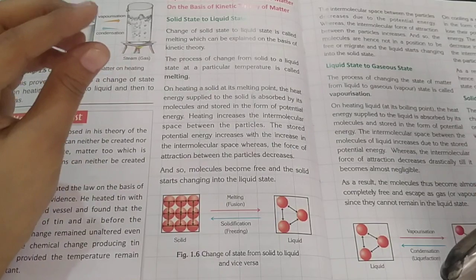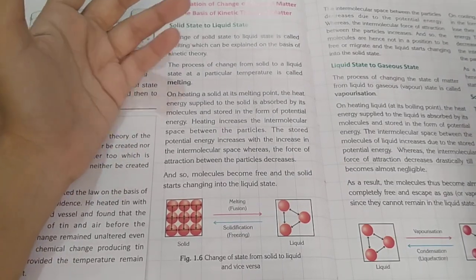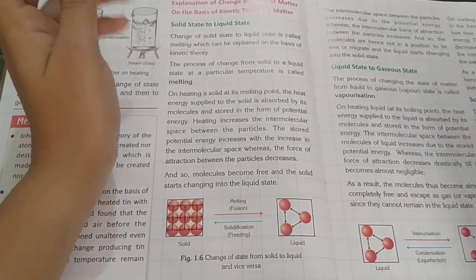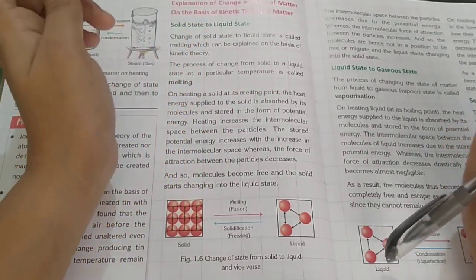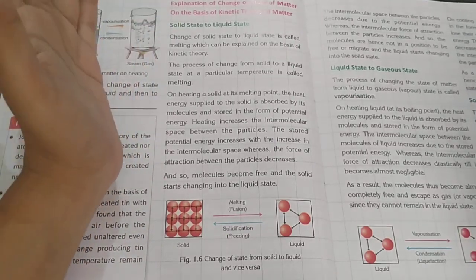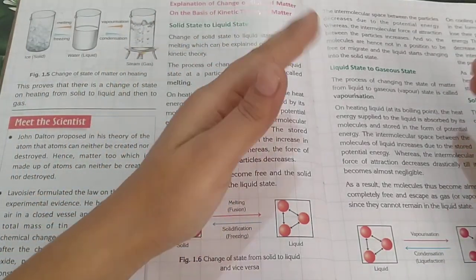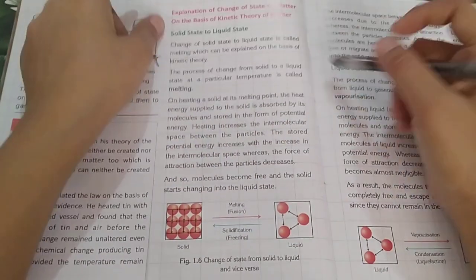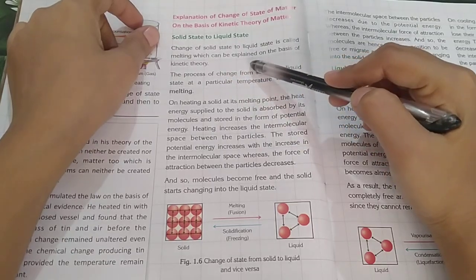Today's topic is solid state to liquid state. We have read about matter, how it is divided, and we have seen that matter has three states. In this video, we will see how kinetic theory works on the change from solid state to liquid state. The change of solid state to liquid state is called melting, which can be explained on the basis of kinetic theory.